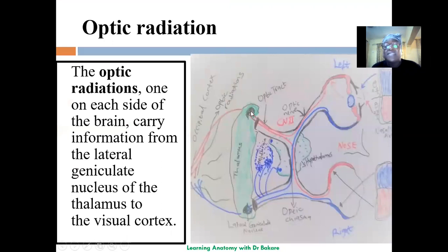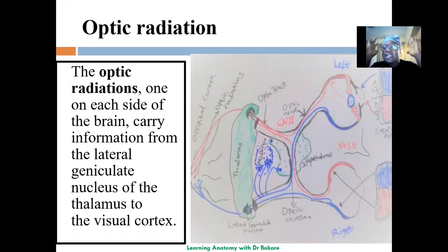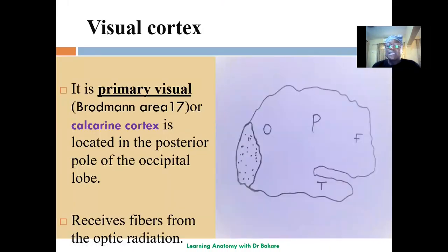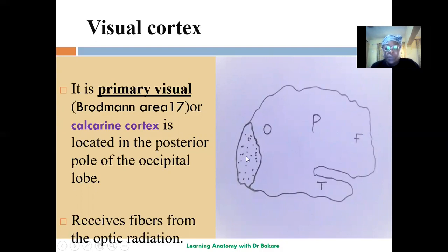After going to the lateral geniculate nucleus in the thalamus, the fibers then radiate — this is called the optic radiation. Fibers from the left lateral geniculate nucleus radiate, and fibers from the right lateral geniculate nucleus also radiate on both sides. Their target is to terminate on the visual cortex, which is located at the posterior pole of the occipital lobe. It is also called the calcarine cortex or Brodmann area 17, and this is the final region where the optic radiation terminates and visual processing occurs.